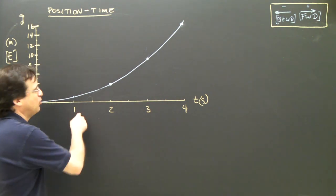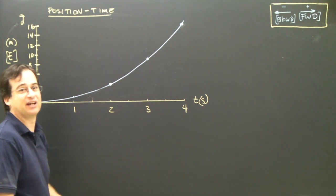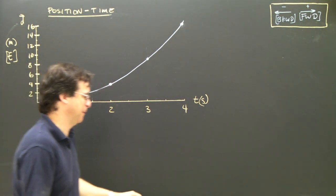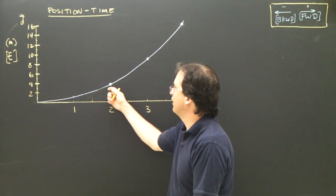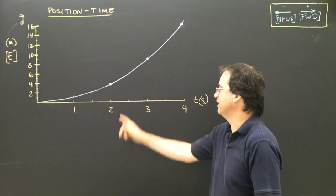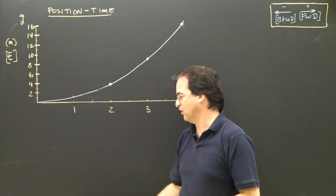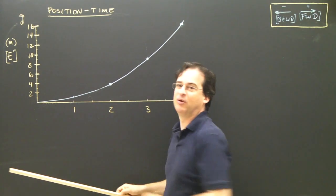The question is, how fast am I going at one second, two seconds, or three seconds? I need to know that. Let's look at two seconds. I need to know how fast the object is going or what its velocity is at two seconds. I know the slope of a position-time graph is velocity. So I need to take the slope of that little section.